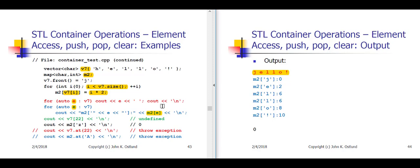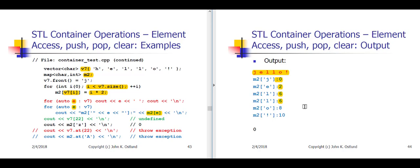This loop is going to run 6 times. The first time through, e is set to 'j' and I'll be told that m2['j'] is 0. The next time, e is set to 'e' and m2['e'] is 2. The third time, m2['l'] is 6. And because I have two 'l's in v7, I also get a 6 when I look up m2['l'] again. Then I get 8 for key 'o' and 10 for key '!'.